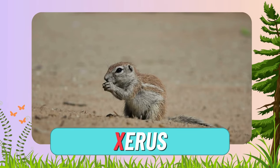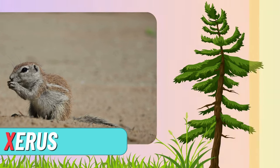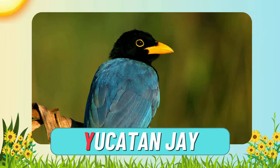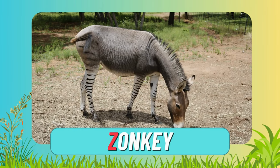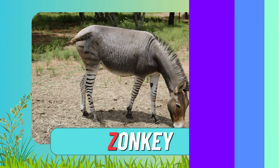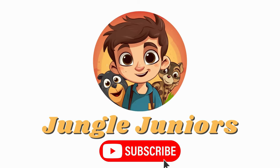The letter X is for xerus. The letter Y is for Yucatan jay. The letter Z is for zonkey. Like and subscribe for more adventures, and we'll see you on the next one.